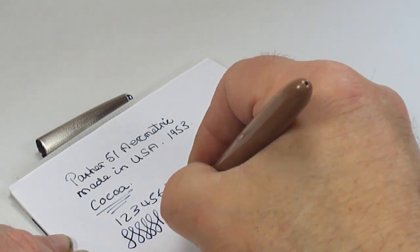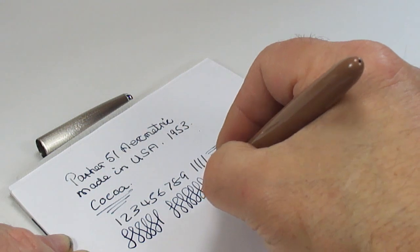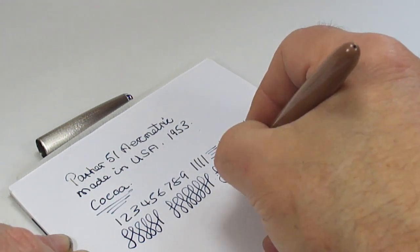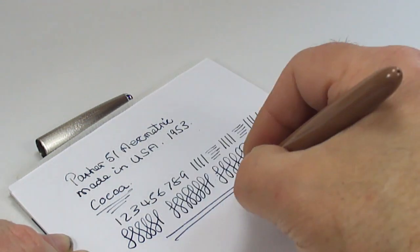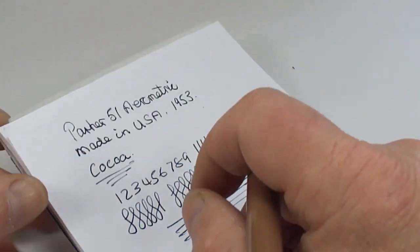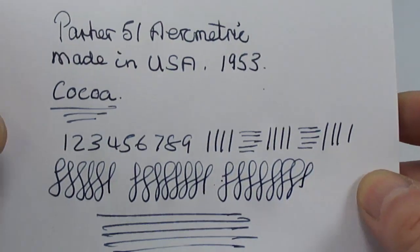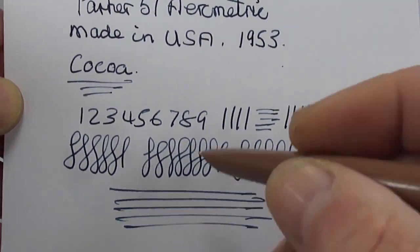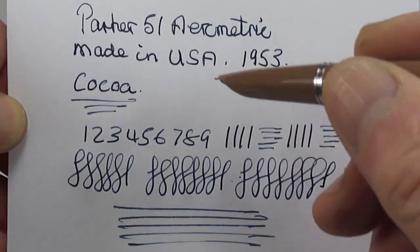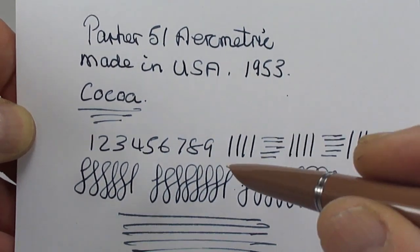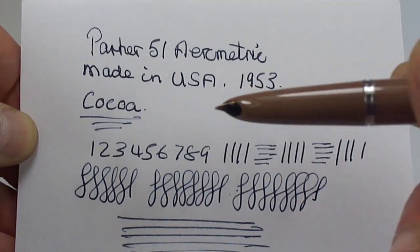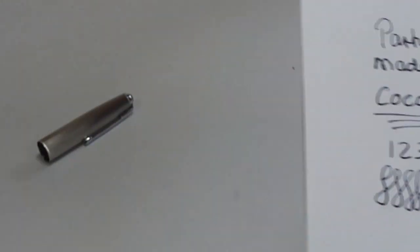There we go, some lovely figure of eights there. You can see I would say the pen is writing with a fine fine line. So there's a writing sample, lovely ink flow, writing lovely and smooth as I said with a fine fine line.